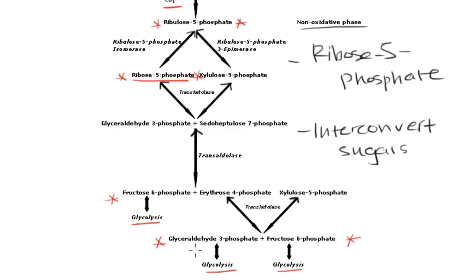Glyceraldehyde 3-phosphate is actually a 3-carbon sugar. So the ability to interconvert sugars through enzymes like the transaldolase and the transketolase will essentially allow cells to produce more ribose 5-phosphate for DNA and RNA synthesis if needed.